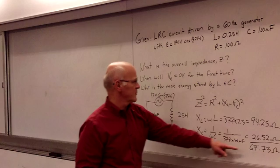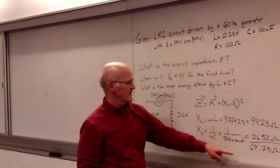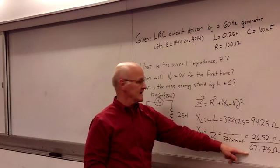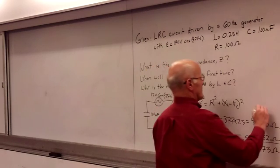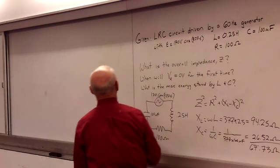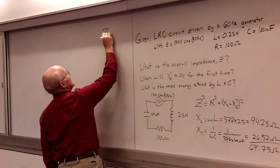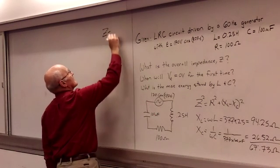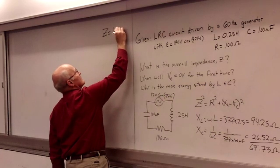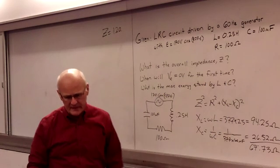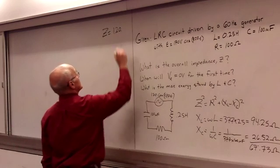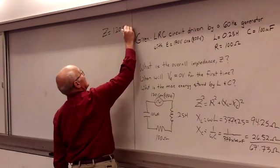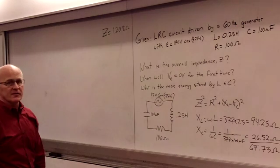So that's what we need to plug into this part over here. We're going to take 67.73 and square that, then add that to 100 squared, and we'll end up with a value for Z. And so Z turns out to be 120.8. Okay, so that's our first step.